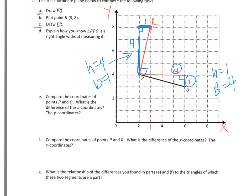Let's take a look at part E. It says compare the coordinates of P and Q. What is the difference of the X coordinates and then the Y coordinates? So the difference just means subtracting them. So P, the X coordinate is 2. Q, the X coordinate is 6. So the difference between those is 4. And then for the Y coordinate, for P it's 4, and for Q it's 3. So the difference between 4 and 3 is 1.